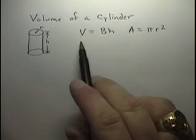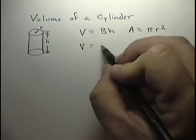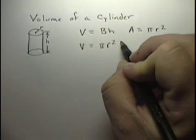So to find the volume of a cylinder, we must plug in area pi r squared with the height.